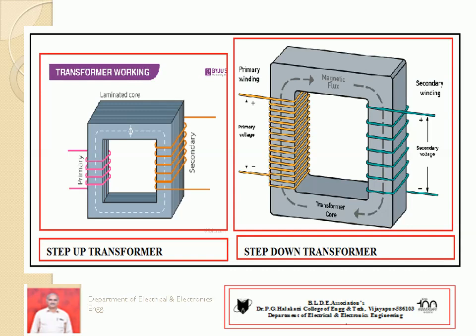Now we can practically observe which is step-up and which is step-down. In the step-up transformer diagram, the primary coil has 4 turns and the secondary has 6 turns — N2 is greater, N1 is smaller, so such a transformer is referred to as step-up. For step-down, N1 is more and N2 is less — for example, the primary has around 17 to 18 turns and the secondary has 7 turns, so the voltage is reduced: input voltage is more, output voltage is less. Such step-down transformers are used in your mobile charging units — 230 volts input, 5 volts output — and there are many such applications.